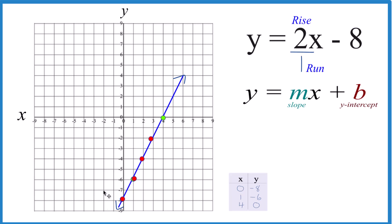And that's it. That's the line for y equals 2x minus 8 using a table of values, and we also used slope-intercept form. This is Dr. B. Thanks for watching.